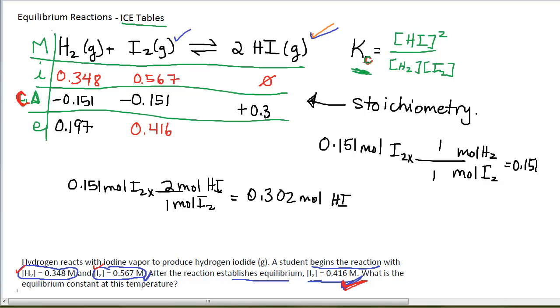0.302 moles per liter of HI are produced. In this case, they are produced. This is a positive numerical value. I am using up reactants. I am producing products. And so at equilibrium, the amount of HI is 0.302 moles per liter. That's the molarity of it. Now I have all of my equilibrium values and I can plug them into my equilibrium constant.